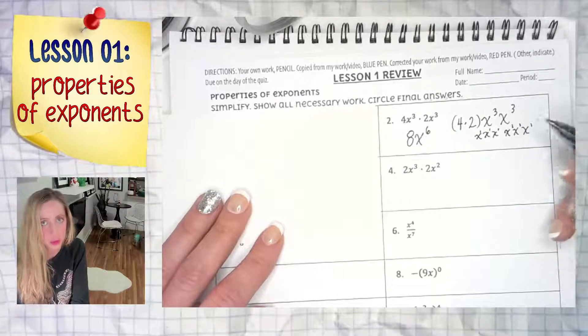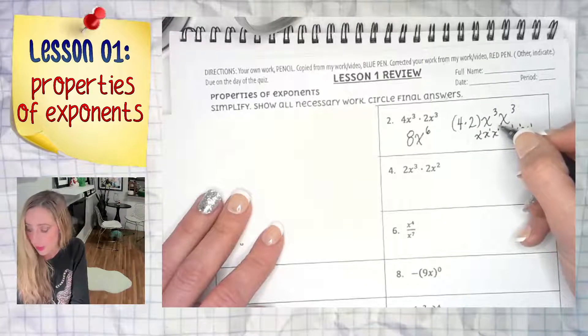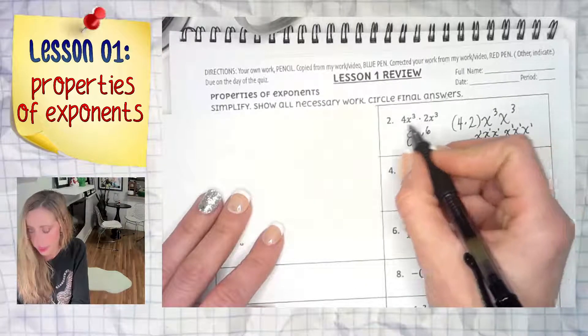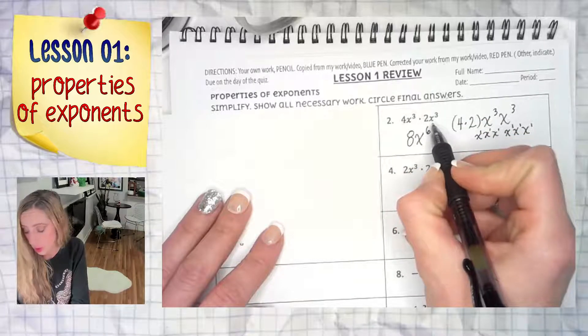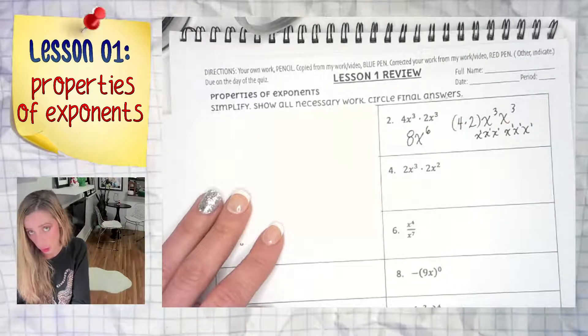Different rules for different problems. If we were adding, you cannot add unless they have the same exponent. So if this was 4x cubed plus 2x cubed, you could add, and that would be 6x cubed.